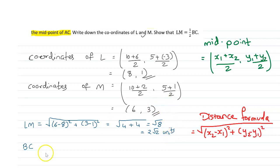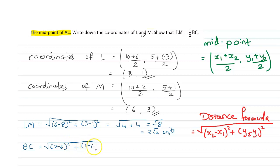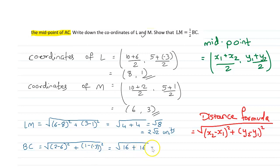Similarly, we find the length of BC, whose coordinates are already given in the question. The length of BC is the square root of (2 minus 6) squared plus (1 minus negative 3) squared. That gives (-4) squared = 16, and (1 plus 3) = 4, so 4 squared = 16. That is the square root of 32, which equals 4√2 units.